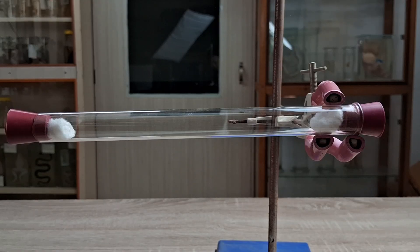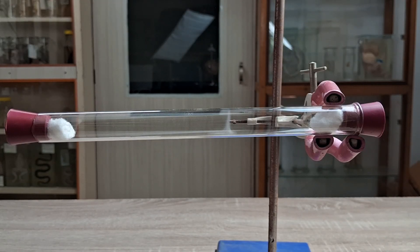As the reaction progresses, this cloud ring increases in area, travels closer to the hydrochloric acid cotton ball, and eventually begins to spread throughout the inside of the tube.